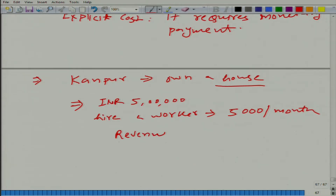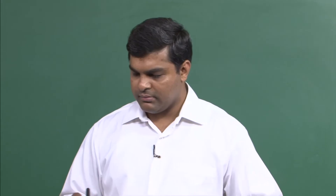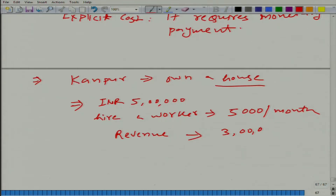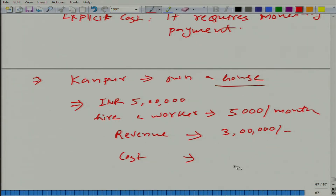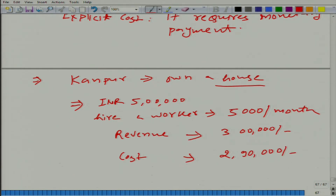Let us say your total revenue is 3 lakh rupees and the cost of the clothes you bought is 2 lakh 90,000 rupees. That is for the first month of operation. And the cost of electricity is 5,000 rupees.